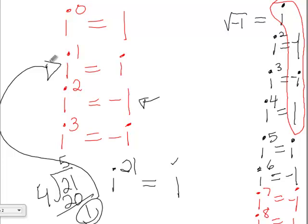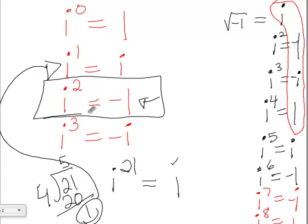When you're multiplying or dividing radicals, the one you'll use most is i squared, knowing that i squared equals negative 1.